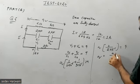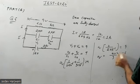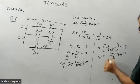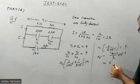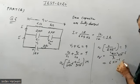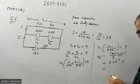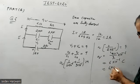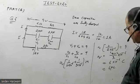9 into 2 upon 3 into 10 to the power minus 6. The 3 cancels, so q value comes 6 microcoulombs. So 6 microcoulombs is stored across each capacitor.